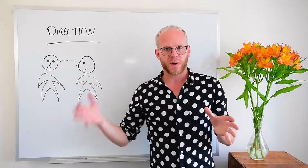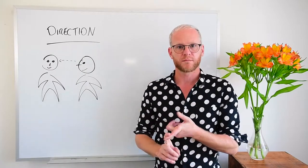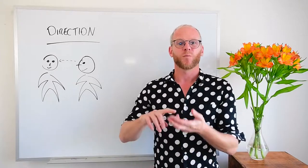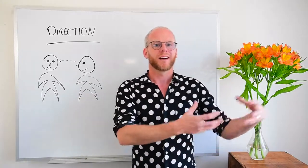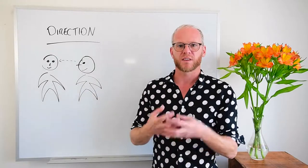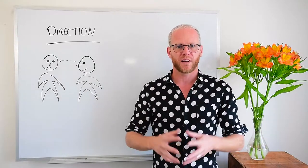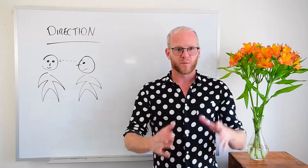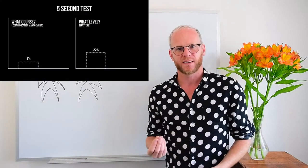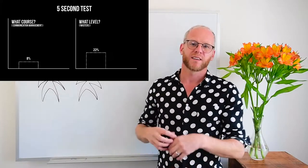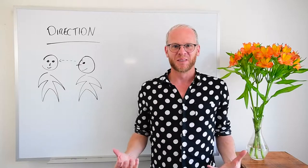In this series of experiments, I asked the same two questions: What course is it? — Communications Management. And what level is the course? — It's a master's degree. I wanted to see how many people could give me the correct answer after seeing the page for only five seconds. In the first experiment with the direct eye contact, only 8% knew what the course was about and 22% knew that it was a master's degree. That's pretty terrible.